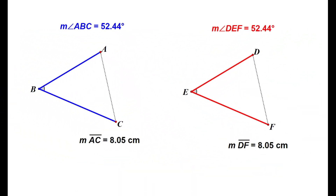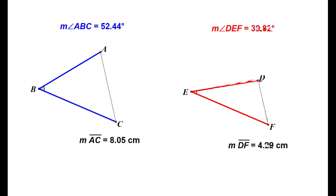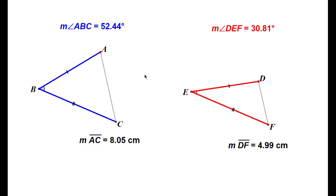So here we have two congruent triangles, each with an angle measure of 52.44 degrees and the opposite segment of those angles has a measure of 8.05 centimeters — just arbitrary numbers. Notice what happens if one of the angle measures becomes greater or smaller. If we change the angle measure in triangle DEF and let the angle measure become smaller, say about 30.81 degrees, with the two sides still congruent, then as the angle becomes smaller the opposite segment also becomes smaller. And vice versa — if the angle is greater then the opposite segment, segment AC, also becomes greater.